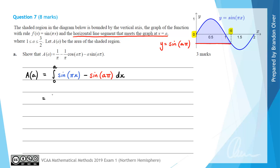To evaluate that, we first need to find the anti-derivative. For the upper function sin(πx), looking at the formula sheet, we get −(1/π)cos(πx) as its anti-derivative. Then we subtract the lower term. The key here is that sin(aπ) doesn't contain the variable x — it's just a constant — so its anti-derivative is simply x · sin(aπ). This is then evaluated between the terminals 0 and a.